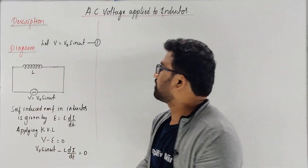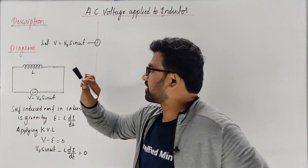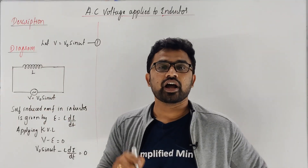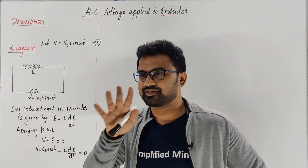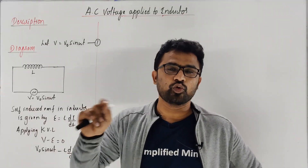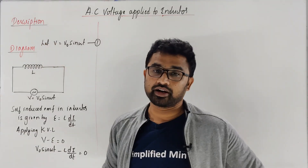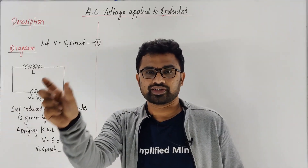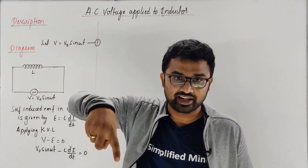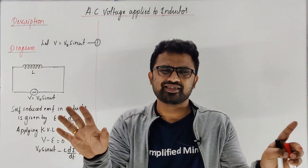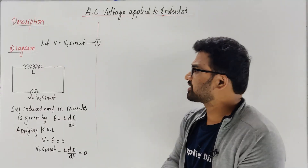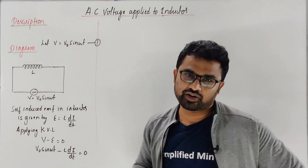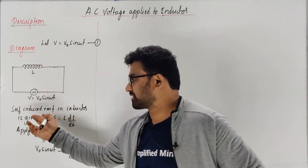So now, consider an inductor of inductance L connected to an AC source as shown in the figure. It's very simple. Let the AC voltage be V = V₀ sin(ωt). In the derivation, first we assume V = V₀ sin(ωt). From this formula we will derive the current expression, then we'll compare both. So: let the AC source V = V₀ sin(ωt) — draw the diagram.